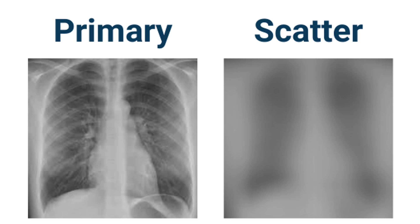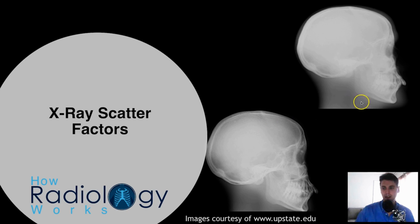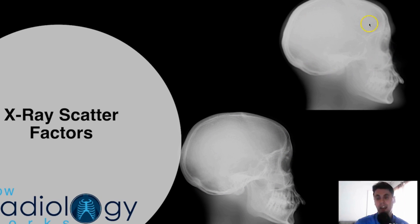In x-ray imaging, it's like adding a blurry haze to the background of the image. You can see here — this is an image without any anti-scatter grid, and then this is an image with an anti-scatter grid. There's a haze added to the background of this image, which is improved in the case of the second image, again of the brain.